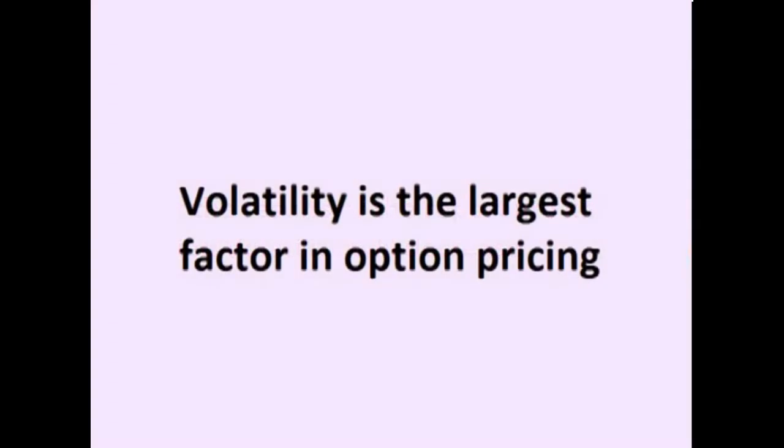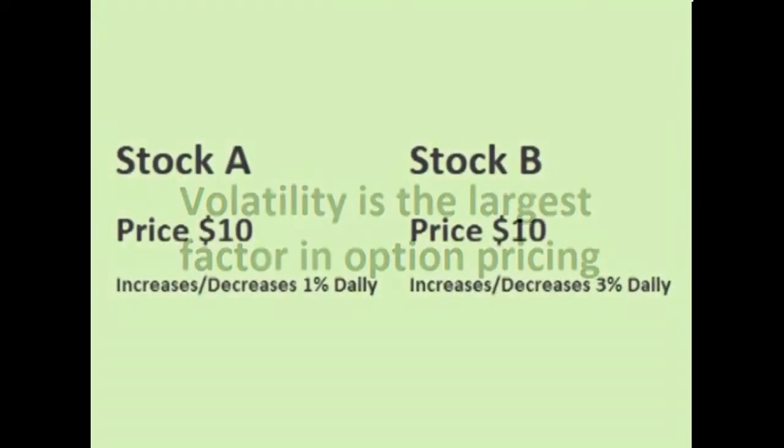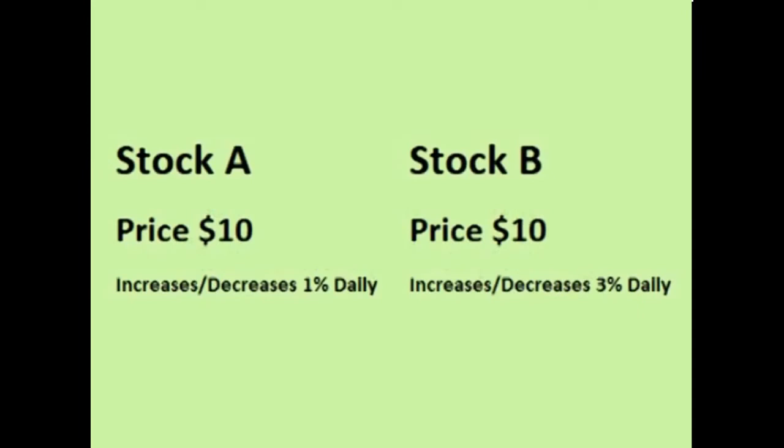Volatility is the largest factor in determining option pricing. Let's say that there are two stocks that are both priced at $10 per share. One of these stocks goes up and down about 1% or 10 cents each day, and the other stock goes up and down about 3% or 30 cents each day. Let's say that a trader buys $12 call options on both stocks, locking in a preset buy price of $12, hoping that both stocks rise above $12 before the options expire. The stock that moves around 3% each day has a better chance of rising over $12 than the stock that only moves 1% each day.